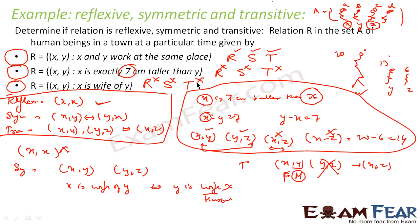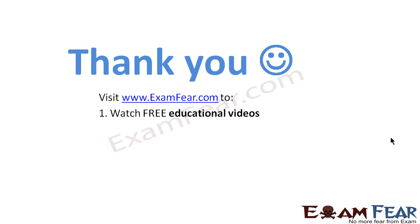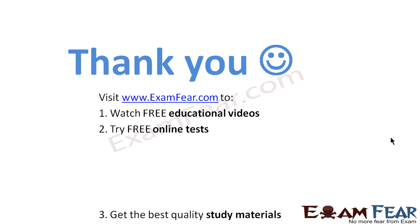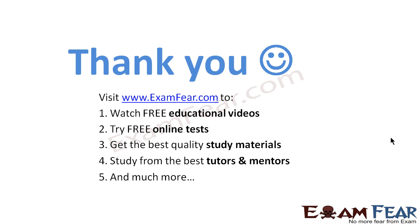So what we observe is that for the same set A, sometimes we get a transitive relation, sometimes reflexive, sometimes symmetric — it all depends on the relationship we choose. Visit examfear.com to watch free educational videos, try free online tests, get the best quality study materials, and study from the best tutors and mentors. Thanks once again.